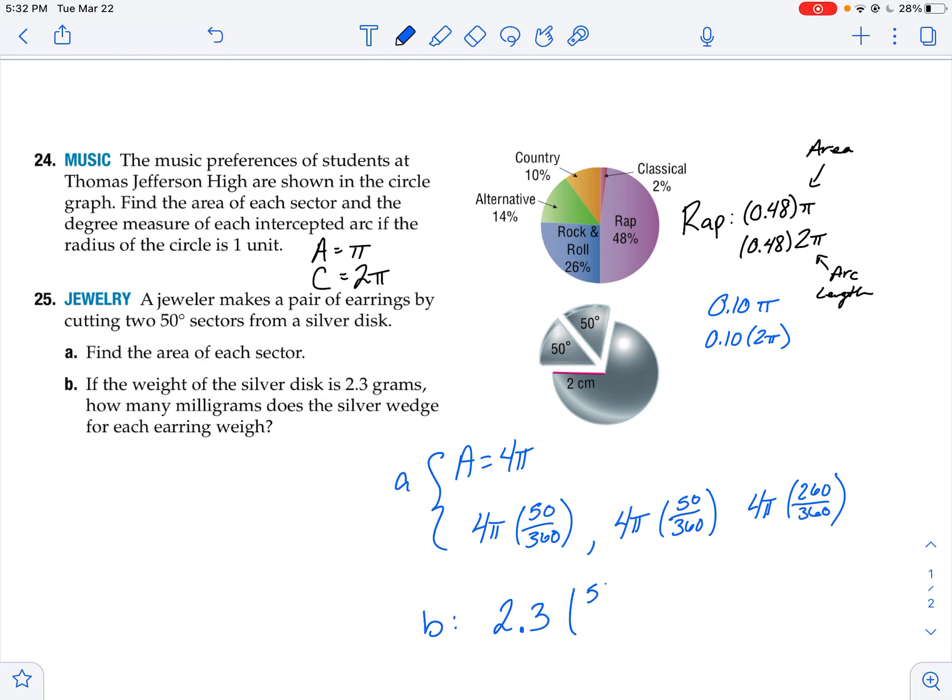And I'm going to multiply that by that fraction. And that's going to tell me how many grams. So 50 over 360. Multiply that by 2.3 grams. So that would be 0.3194 grams.